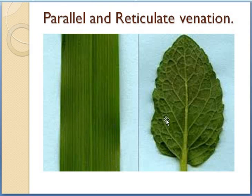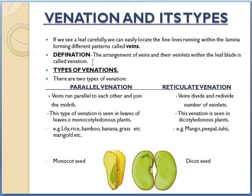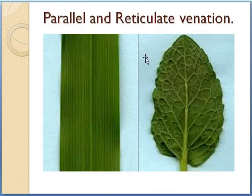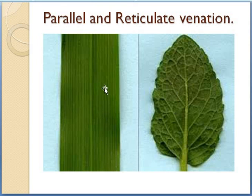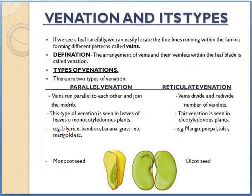So these are called the veins. Coming back to the topic — definition. What is venation? The arrangement of veins and their veinlets within the leaf blade is called venation. You can see in the picture how the veins are arranged on the leaf — either they are scattered here and there, or either they are running in a straight line. This pattern of veins is called venation.